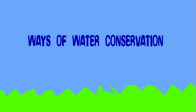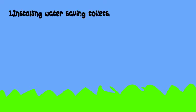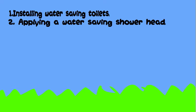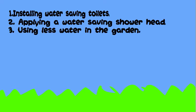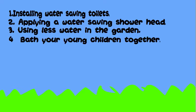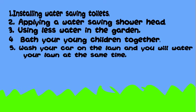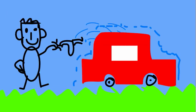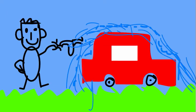Some bases of water conservation include: installing water-saving toilets, applying a water-saving shower head, using less water in the garden, bathing your young children together, and washing your car on the lawn so you water your lawn at the same time. Thank you. Have a nice day.